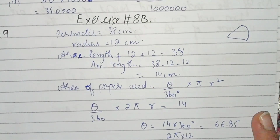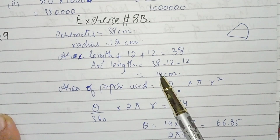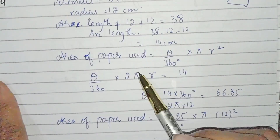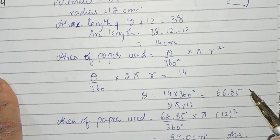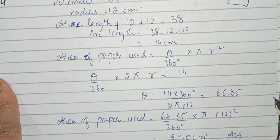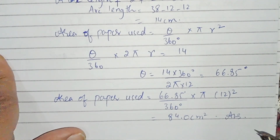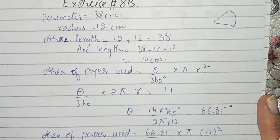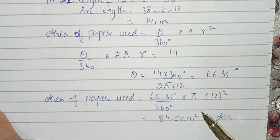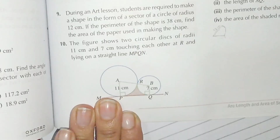In question number nine, we first found the arc length because theta was not given, only the perimeter was given. We then found theta using the arc length formula and got 66.85 degrees. We substituted theta into the sector area formula and got the answer. Question number nine is done.